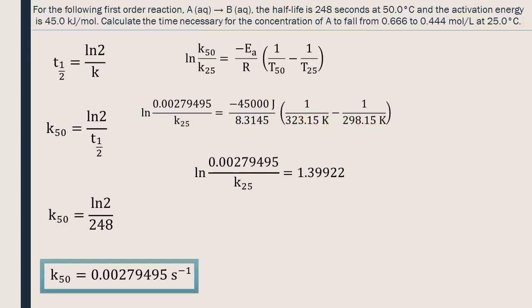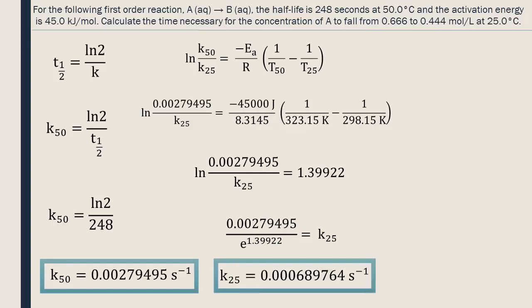To get rid of the ln on the left, we put both sides as base e. Let's switch the right side and the rate constant. Here is the rate constant at 25 degrees Celsius. Again, we keep multiple significant digits for now.